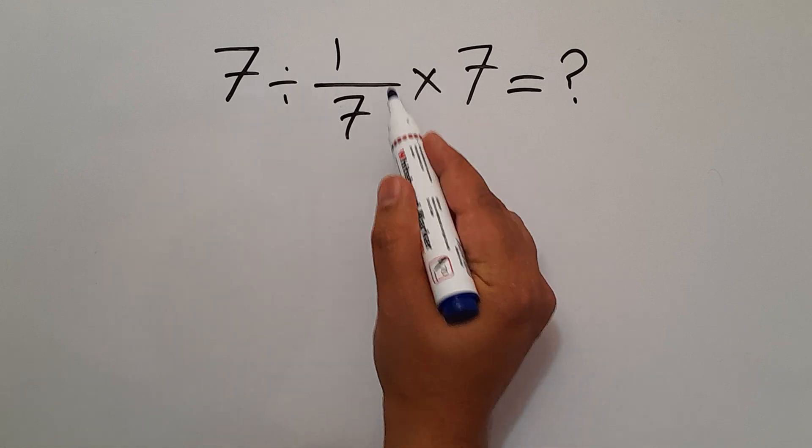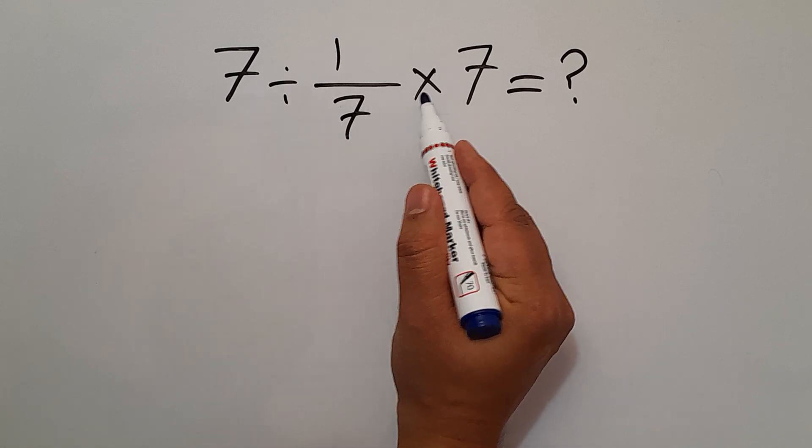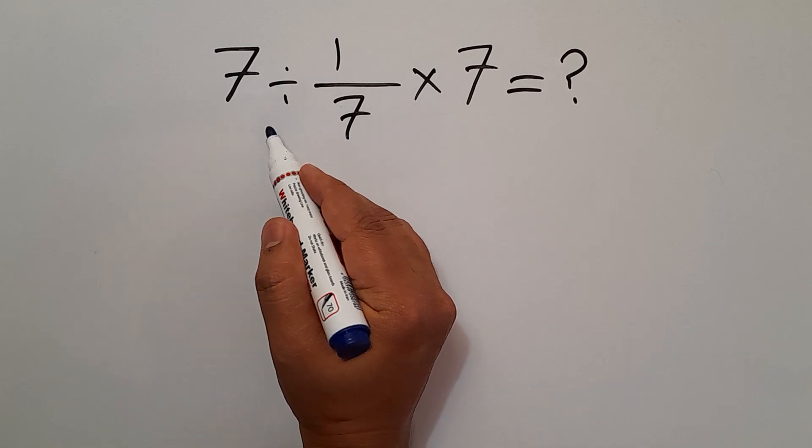In this expression we have one division and one multiplication. As we know, multiplication and division have equal priority and we have to work from left to right.